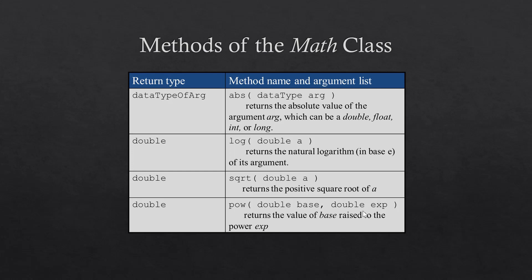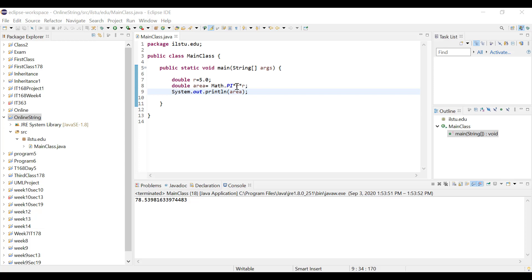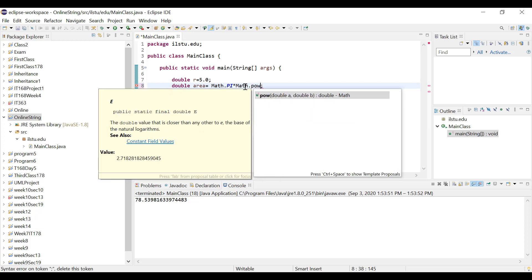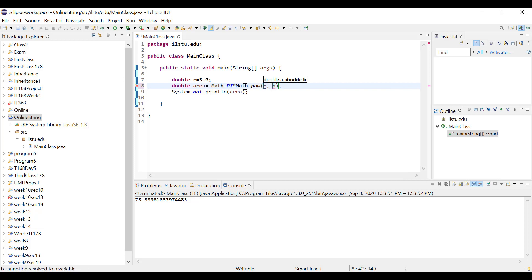The Math class also provides static methods for common calculations. For example, instead of multiplying the radius by itself, I can use the power method to raise the radius to the power 2. We can also calculate the square root of a number using the sqrt method, or find the natural logarithm or absolute value. In Eclipse, I replace r times r with Math.pow(r, 2), and running the program gives the same exact result.